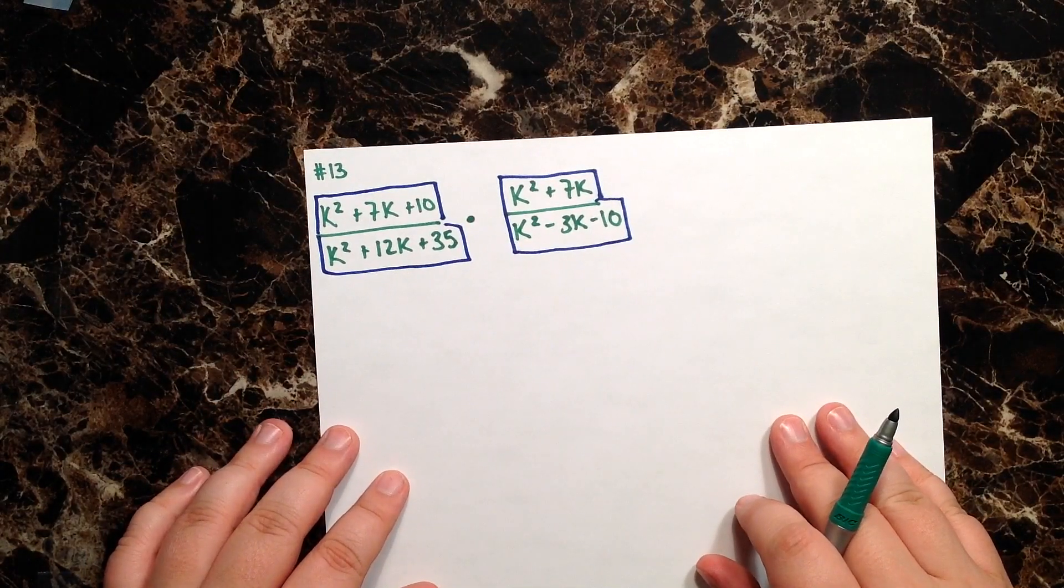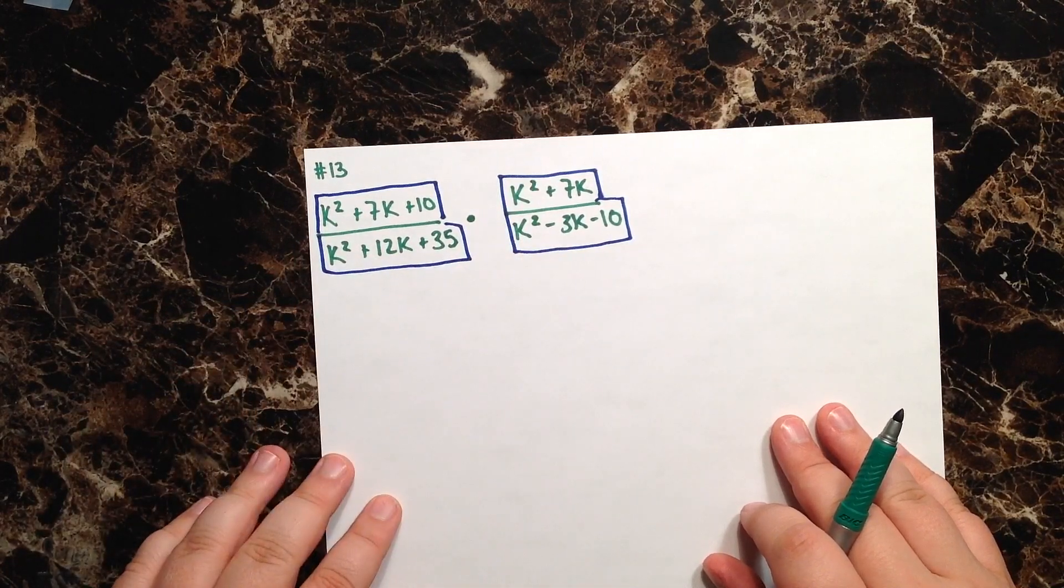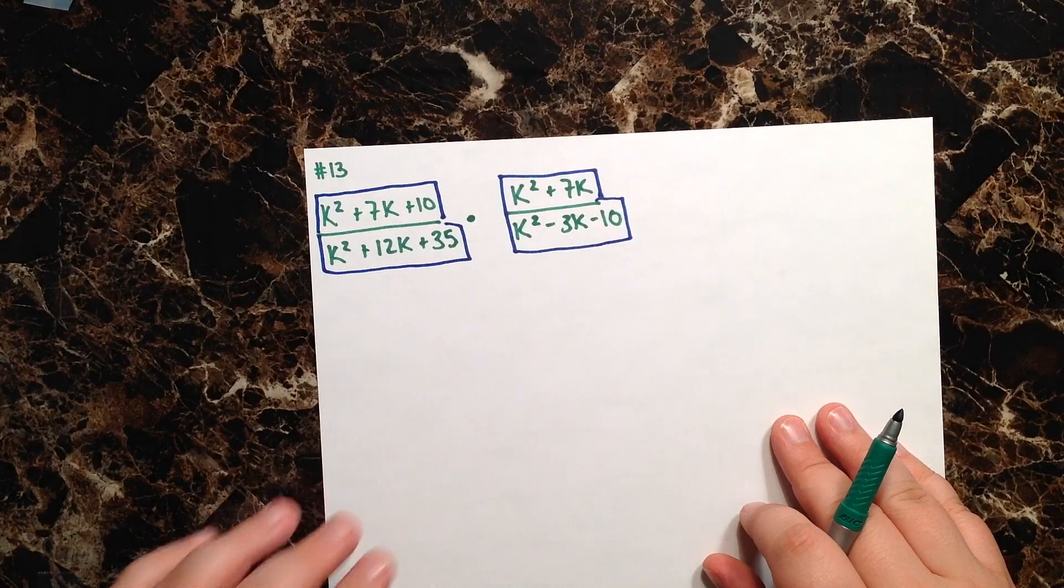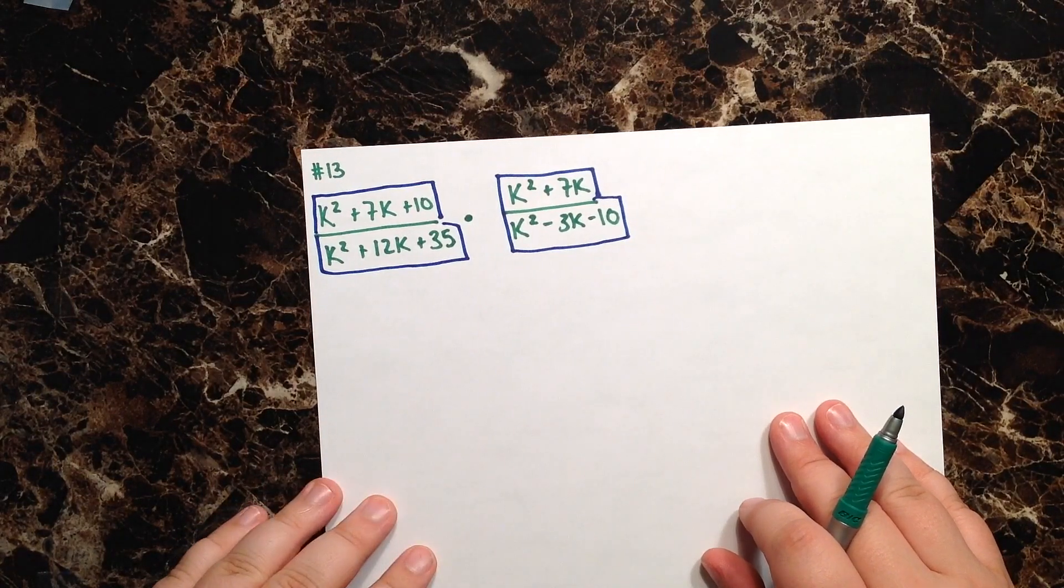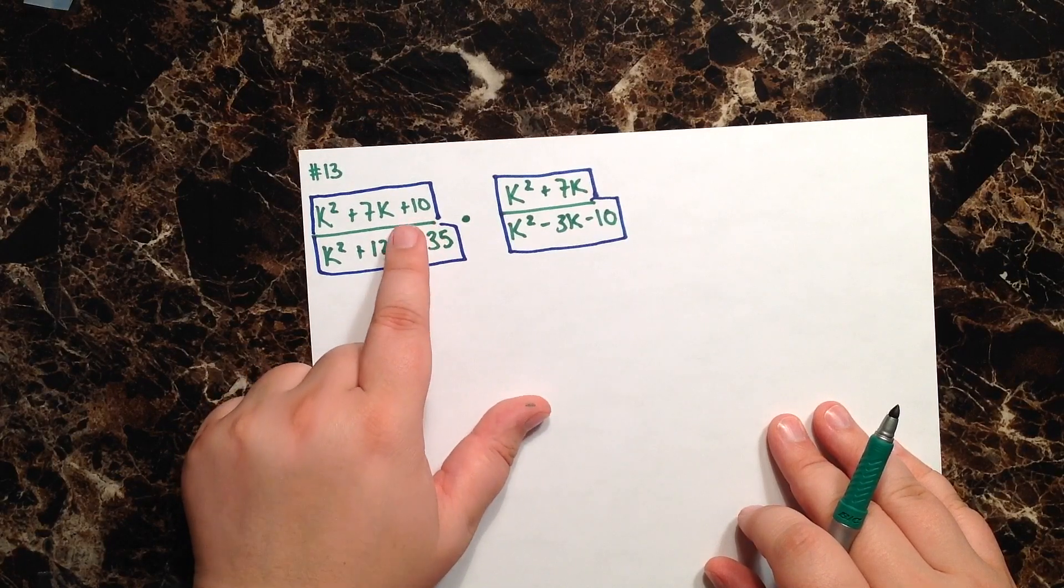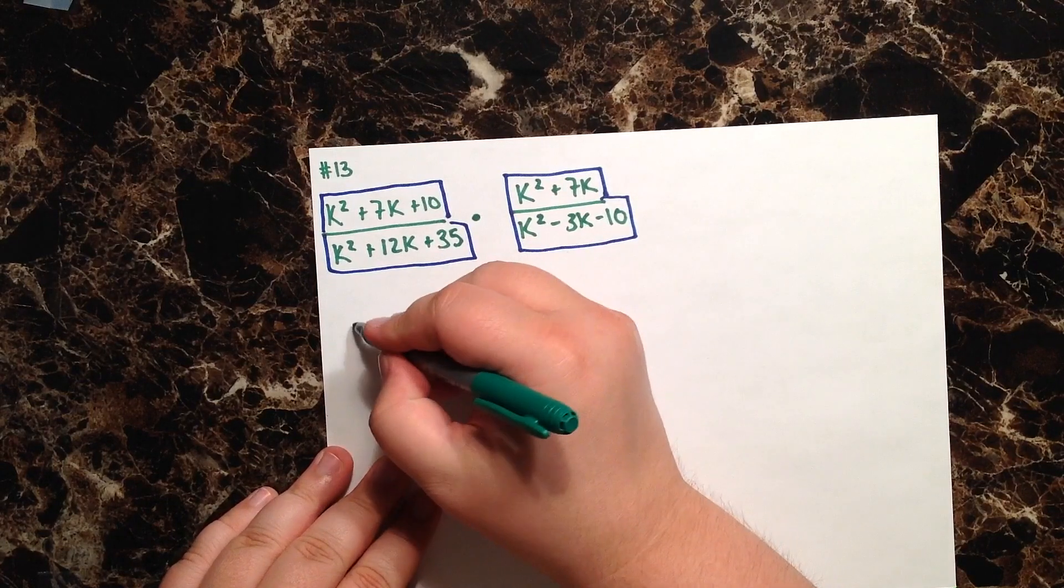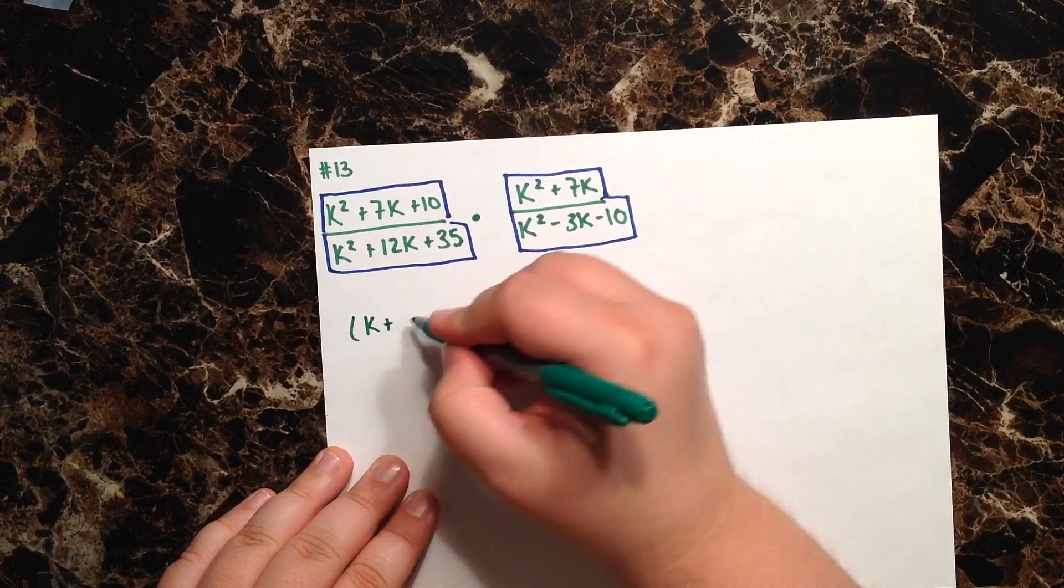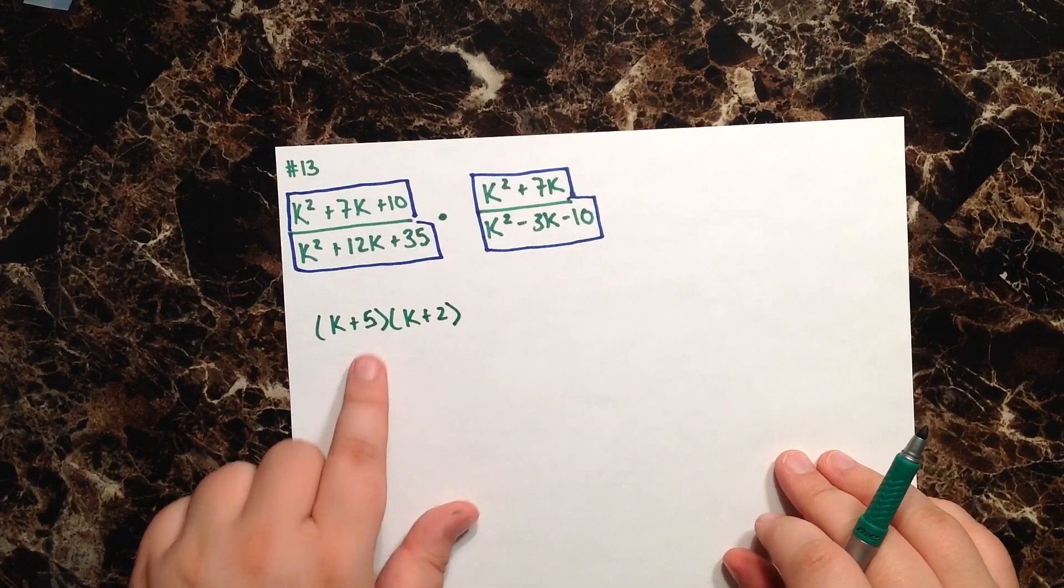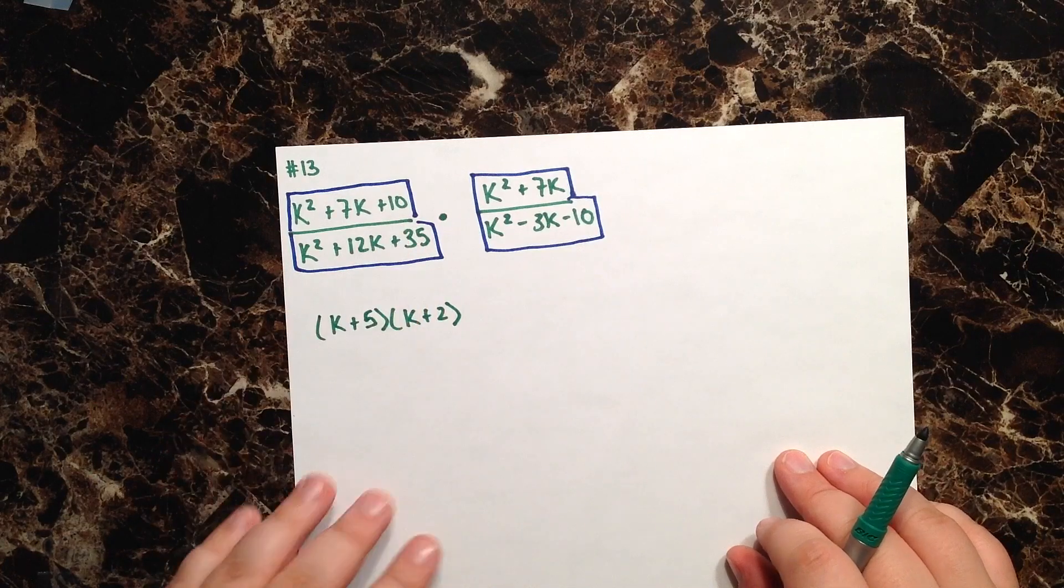Let's factor each one of these. When I look at the numerator for my first fraction, k-squared plus 7k plus 10, I'm going to look for factors of 10 that add to give me 7. That's going to be k plus 2 and k plus 5, which gives us 10 and adds to 7, so that checks out.